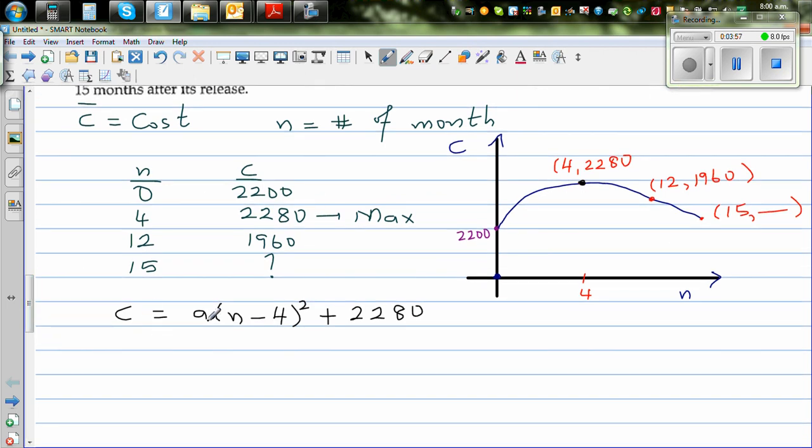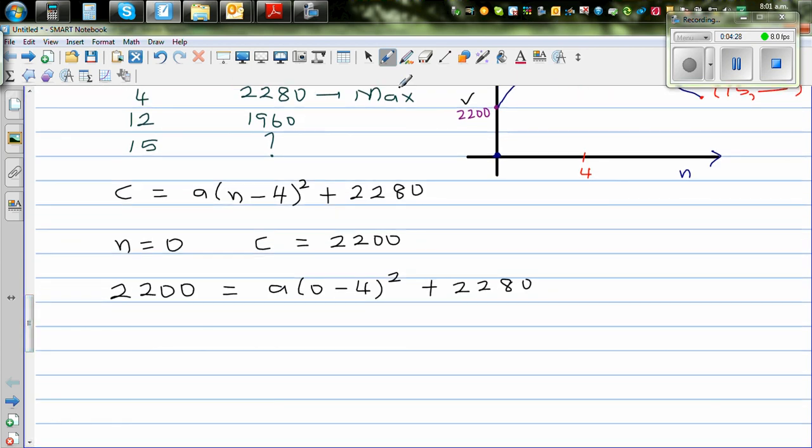Now we need to figure out A, for which we can put either this point or this point. So I'm going to select this point. We know when N is 0, your C is 2200. So let me put 2200 in place of C. So 2200 equals A times (0 minus 4) squared plus 2280.